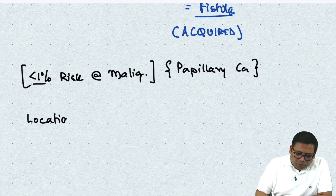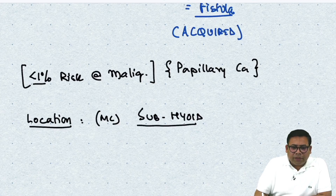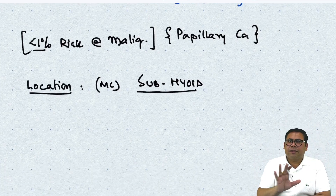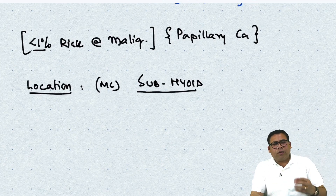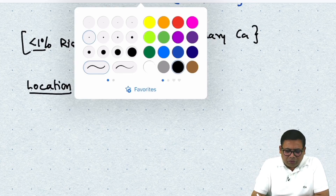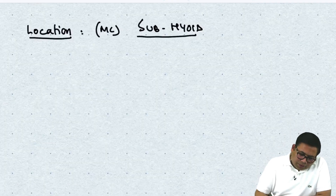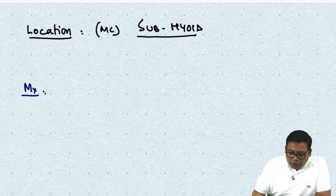Regarding the most common location, it is the subhyoid or infrahyoid region, near the hyoid bone. It may also be retro or suprahyoid, but subhyoid is the most common.